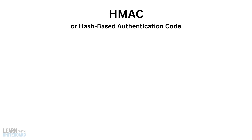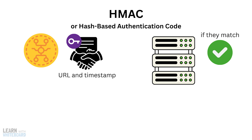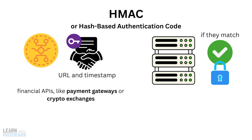Now let's talk about HMAC, or Hash-Based Message Authentication Code. Here, instead of sending just a token, the client generates a signature using a secret key and the request details, like the URL and timestamp. The server recalculates the signature, and if they match, the request is considered valid. This process also ensures that the request wasn't tampered with. You'll see HMAC used in many financial APIs, like payment gateways or crypto exchanges, because it provides strong integrity.